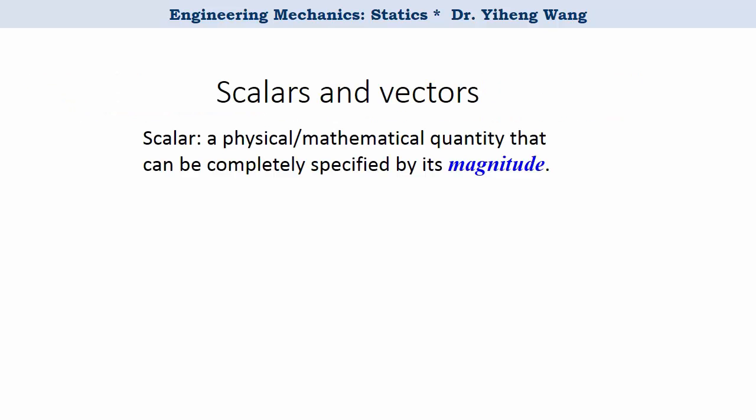You are probably more familiar with scalars. Scalars and vectors are both physical and mathematical quantities. A scalar can be completely specified by its magnitude, in other words how big it is.